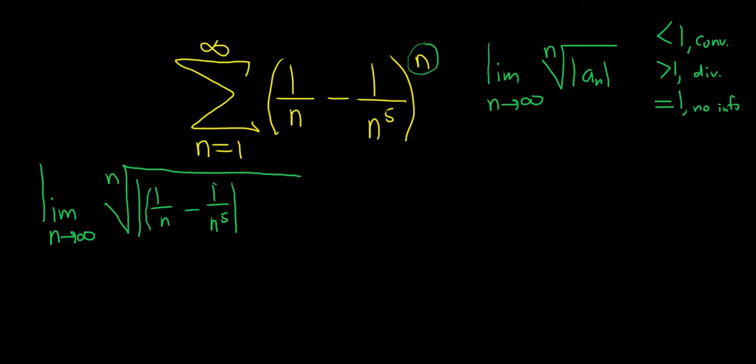So the n is on the inside of the absolute value. Let me just try to squeeze it in. You can put the n outside the absolute value. So let's do that. So n goes to infinity. And when you do that, the n's cancel. So you're left with the absolute value of one over n minus one over n to the fifth.